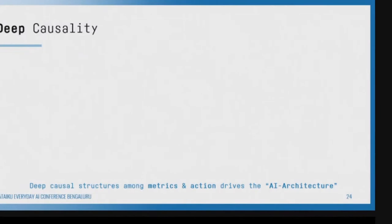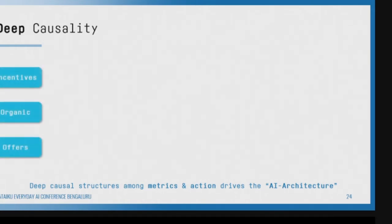This slide is very important. Here we are trying to build a notion of deep causality. Understanding the causality among metrics is a very important skill set for a future AI architect in complex systems. Imagine we work at Ola or Uber — here are the incentives we give to drivers, the offers to customers, and this is my organic demand. What does this affect? It affects the supply and demand of cabs and consumers in the city.